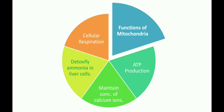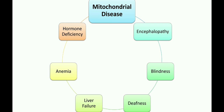Mitochondrial diseases are various diseases related to mitochondria, which may occur due to any dysfunctionality in the mitochondria. These include encephalopathy, where a person may lose memory or power of concentration and may have brain damage; blindness, where a person is not able to see; deafness, where a person is not able to hear. Mitochondrial dysfunction may also lead to liver failure, anemia, or hormone deficiency.